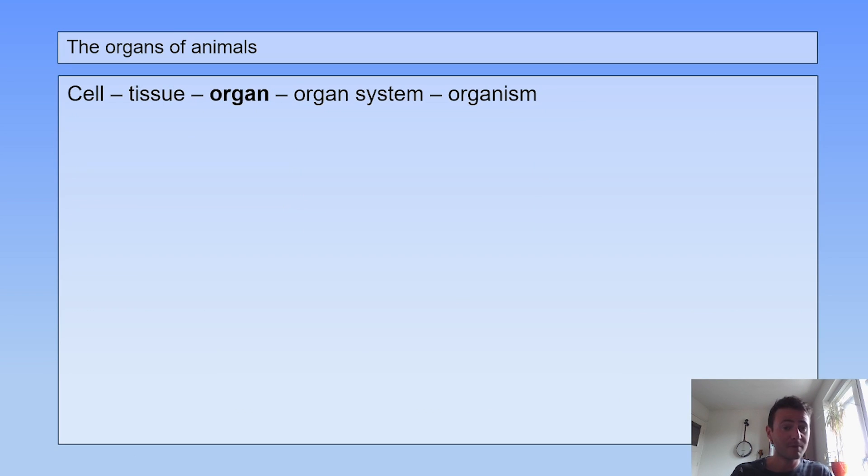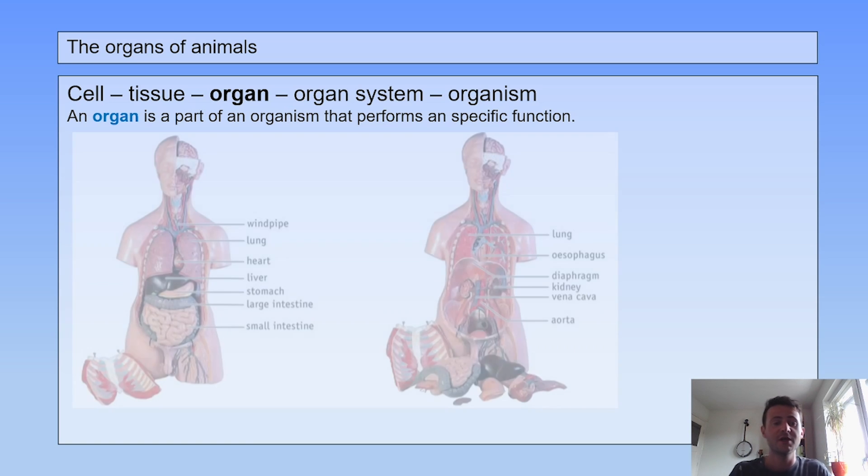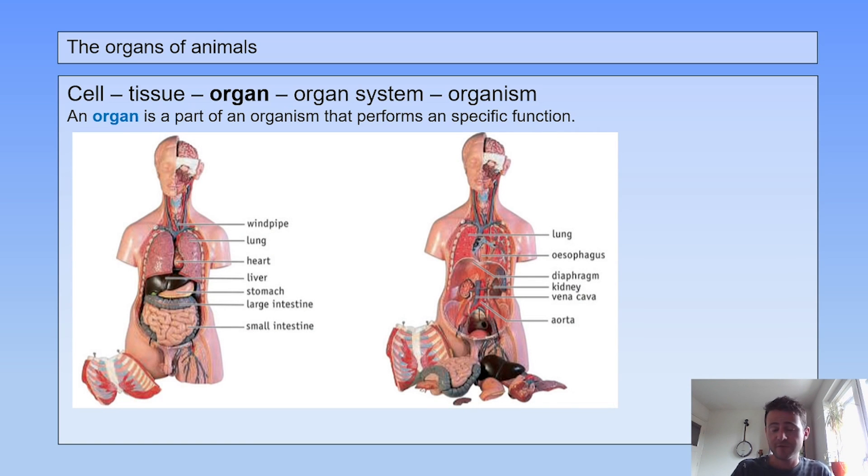One or more tissues can combine to form an organ. An organ is a part of an organism that performs a specific function, or more functions. For example, the heart is responsible for pumping blood through our system. The lungs are responsible for the uptake of oxygen and the release of carbon dioxide. All these organs have their own specific function.